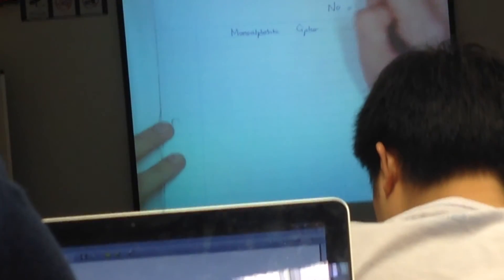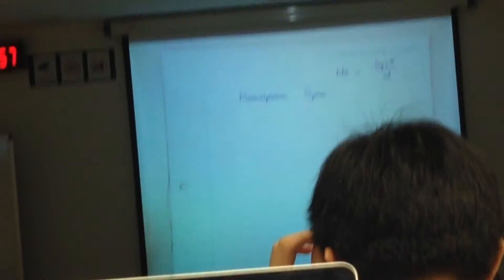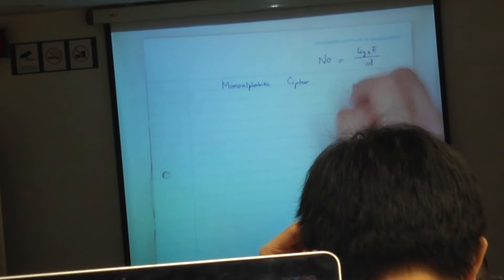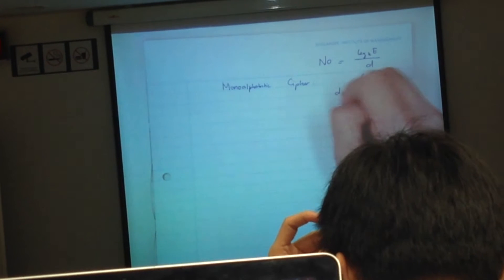N0 is equal to log 2 of T divided by T. That's the formula. So what is T? We know that T is equal to R minus Rp.